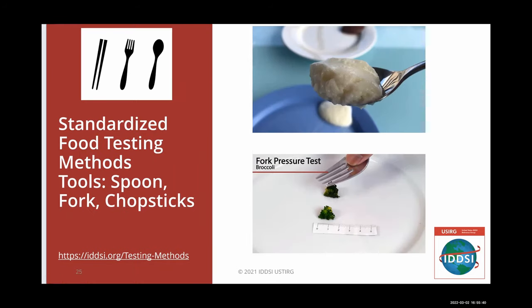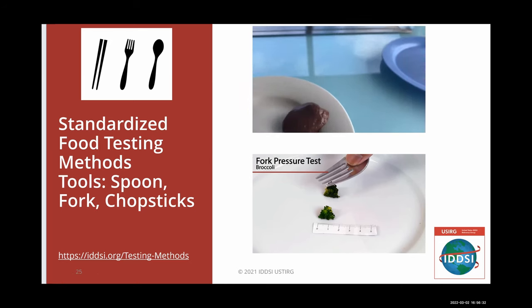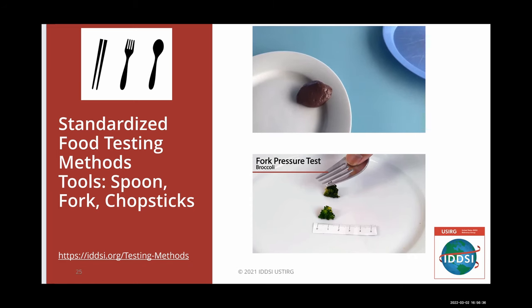IDDSI provides standardized testing methods and measurements to determine whether a food is appropriate for a specific IDDSI level. Common eating utensils such as forks, spoons, and chopsticks are used to determine food levels. For example, puree foods are tested with the spoon tilt test and should slide easily off a teaspoon without sticking. Soft and bite-sized foods are tested with the fork pressure test and should squash and change shape when pressure is applied until your thumbnail blanches white. Food and liquid testing is expected to be performed in the facility's kitchen and at the point of service. For more information on testing methods, please go to iddsi.org/testingmethods.